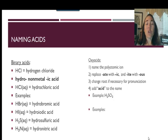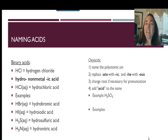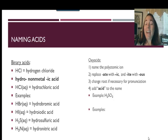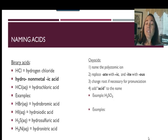Let's look at the oxy acids or ternary acids. You need to recognize the polyatomic ion. If the polyatomic ion ends in '-ate', like sulfate or phosphate, you replace it with '-ic' at the end. If the polyatomic ion ends in '-ite', like nitrite, you replace it with '-ous'. So for H2SO3, I recognize it's an acid because hydrogen is at the front. SO3 is sulfite, and sulfite becomes sulfurous — so this is sulfurous acid.